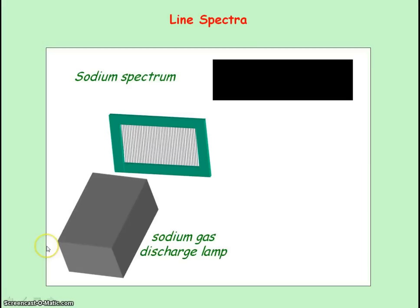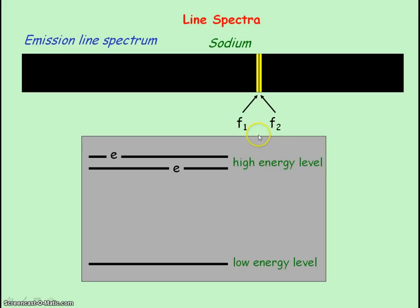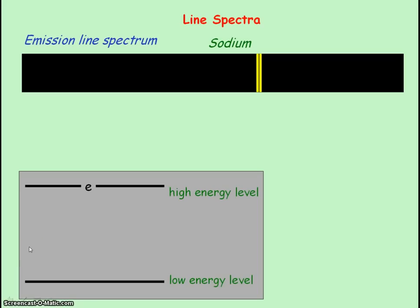A sodium gas discharge lamp emits two wavelengths of yellow light. For these two wavelengths to be emitted, electrons move from a high energy level to a lower energy level, emitting photons of light. Photons of light are emitted when an electron moves from a high energy level to a low energy level.